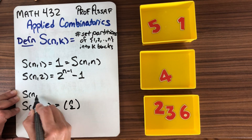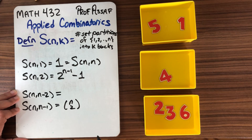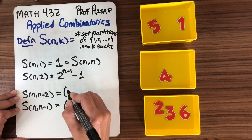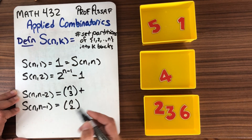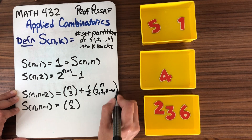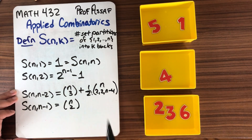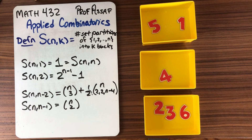For your homework, you were asked to show that for N minus 2 blocks we also have a nice formula. The formula is S(N, N-2) = N choose 3, that's if you have a block of size 3, plus one-half times N choose 2 times (2N-4). Because you're putting two blocks of size 2, and the one-half is really 1 over 2 factorial, since you're permuting those two blocks.